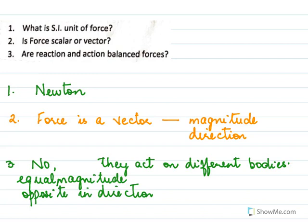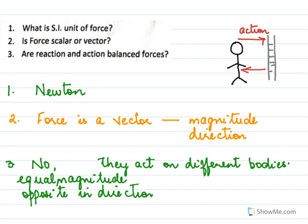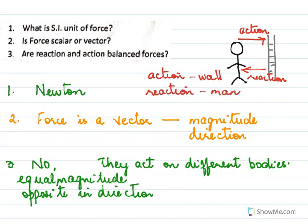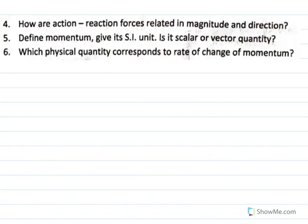To explain this further: suppose you have a wall and there is a person who is pushing the wall. This would be the action — he's pushing the wall, the action is on the wall. The wall pushes him back — this is the reaction. The reaction is now acting on the person; the action is on the wall. So they act on different bodies and hence they are not balanced forces — they do not cancel each other.